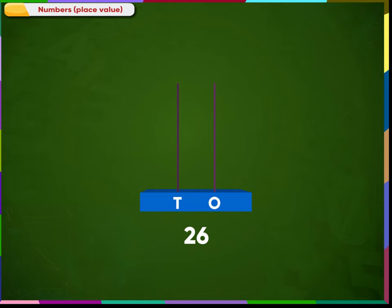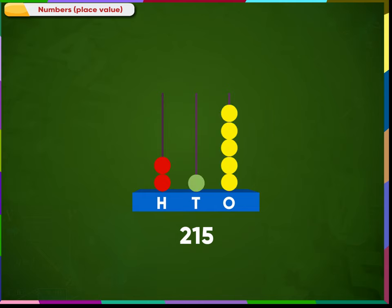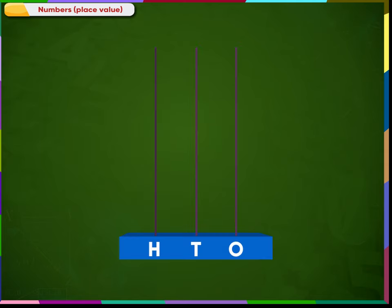The number twenty-six is represented using two beads at ten's place and six beads at one's place. In a three-spike abacus, the spike on the left-most side denotes digits at one's place. For example, the number two hundred and fifteen is represented with two beads at one's place, one bead at ten's place and five beads at the one's place. Let us see how to count numbers in an abacus.